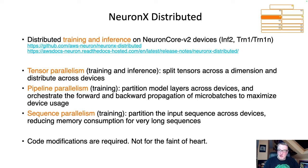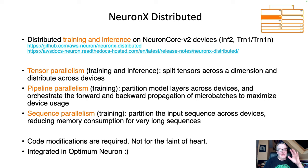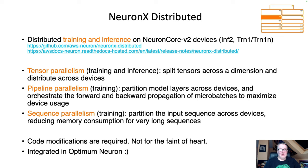I wouldn't recommend using NeuronX Distributed directly unless you're a world-class guru training on thousands of GPUs. Instead, you should trust us and AWS to do the right thing when we're integrating this into Optimum Neuron. That's really the purpose — this is a core technology library that brings very good scalability and performance, but it's very hard to use directly. We'll do the heavy lifting and integrate this into Optimum Neuron so that if you want to run tensor parallelism, it's just a parameter away.